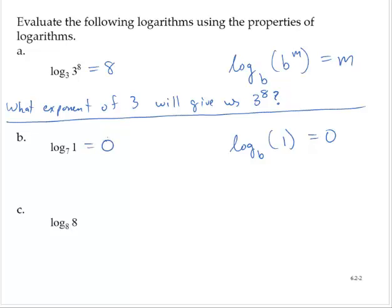Again, if we ask ourselves the question, what exponent of 7 will give us 1? You have to remember your properties of exponents here. In general, what we learned was a non-zero number to the 0 power is 1. Therefore, 7 to the 0 is 1, and so the log base 7 of 1 is 0.